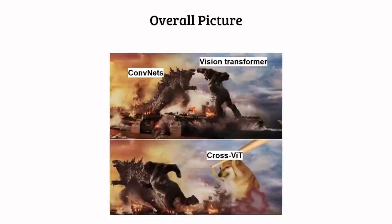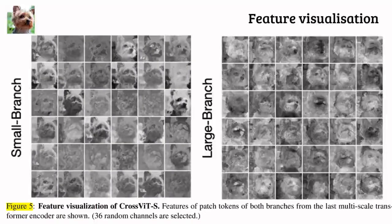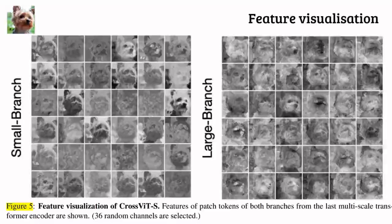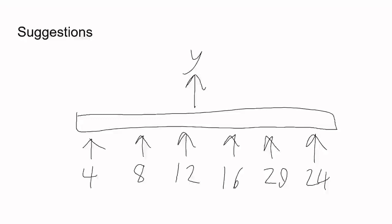Overall, we can say that the cross-vision transformer model outperforms other models. However, we also get some insight into the different feature maps of the small and large branches. Just by looking at the pictures, I can't really tell the difference between them. In my opinion, what they really should have done is to show us the exact attention matrices overlaid on top of the images, so that we can see what the small and large branches are focusing on. I also wonder if it's actually possible to stack more than two branches — like maybe six branches with six different patch sizes. Maybe this is something that someone has done already, but who knows?